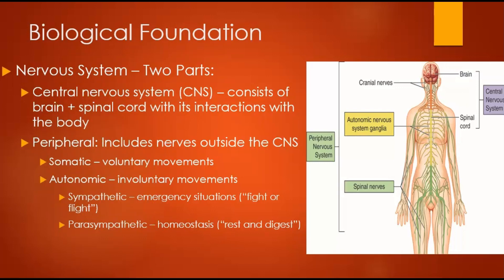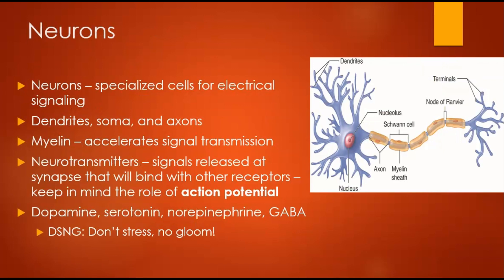Be very familiar with the biological foundations. Now, talking about neurons — also very important. These are specialized cells for electrical signaling. Some important vocab: dendrites receive the signals, the soma contains the cell body, and the axon carries signals away. The myelin is the fatty insulation that helps speed up signal transmission. Neurotransmitters are chemical signals that travel from the axon to the receptors on another neuron.